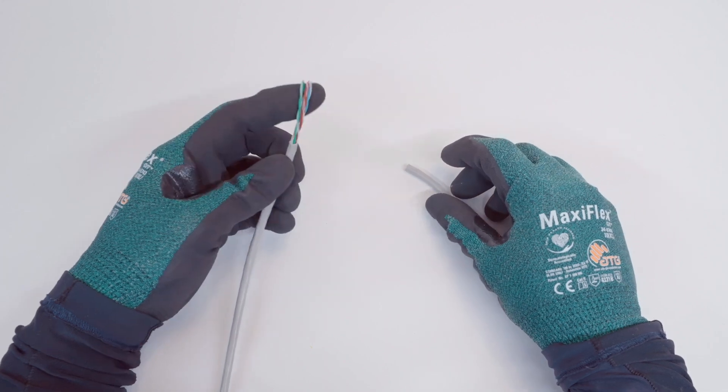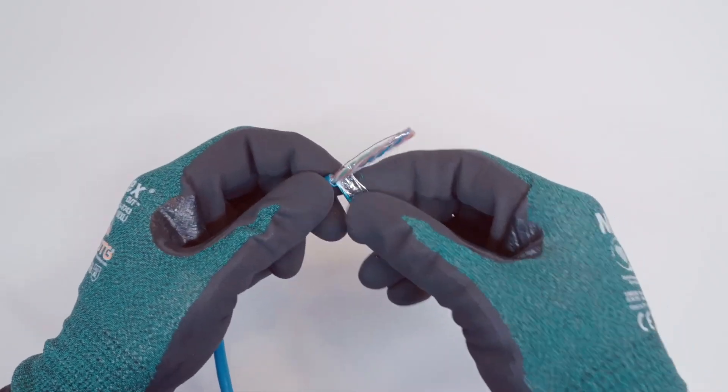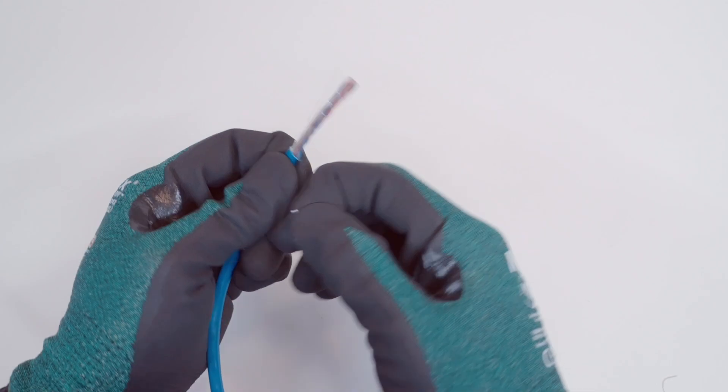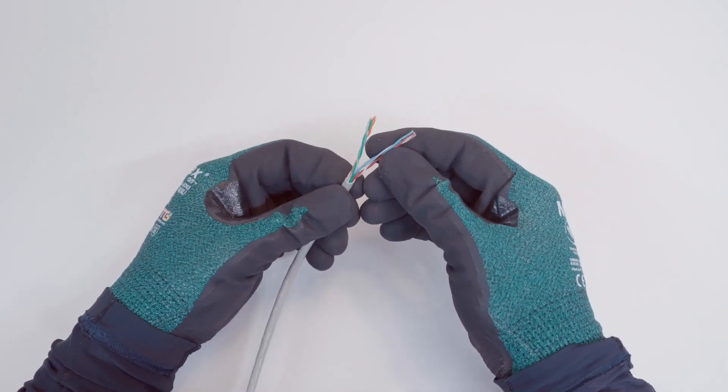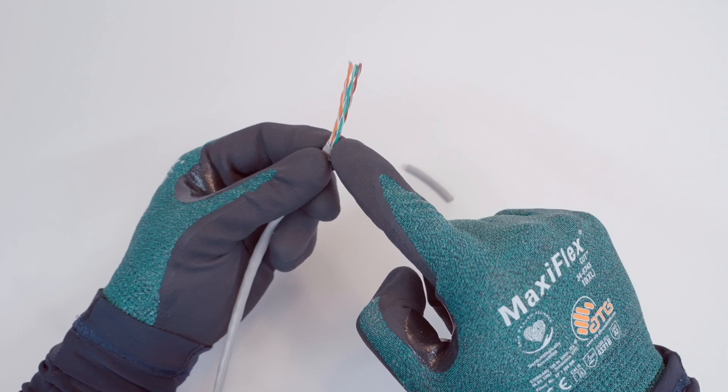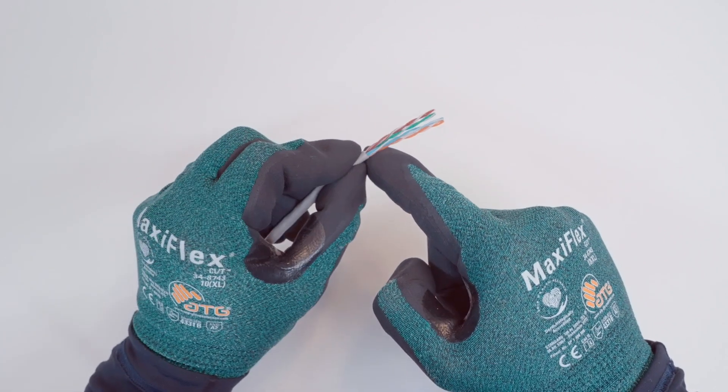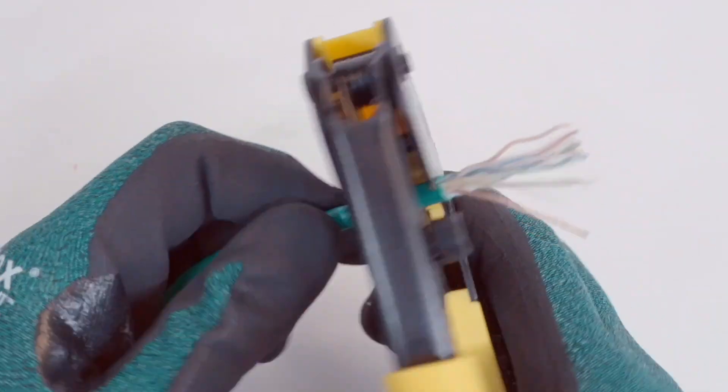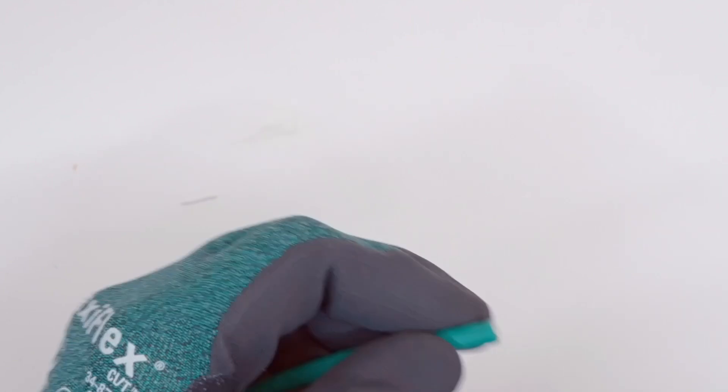If using shielded cable, unwind the metal shielding or foil from the wiring and cut it off. Inspect the wiring within the cable, especially at the end of the jacket, to ensure that it was not nicked or cut while removing the outer jacket. If any wires are damaged, cut the stripped end off and start over.